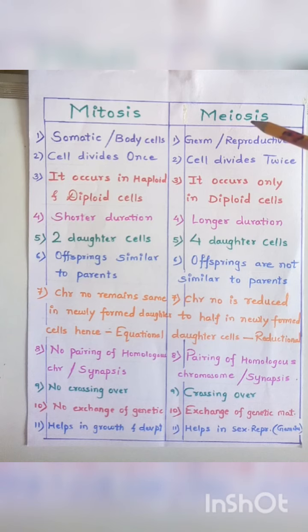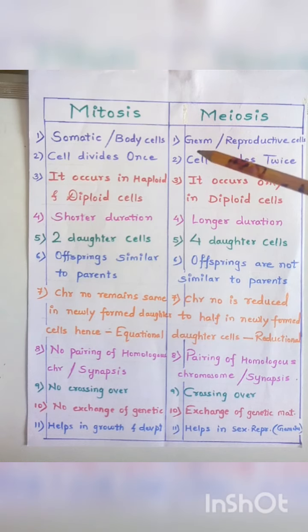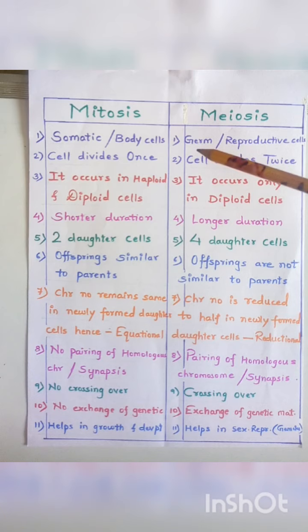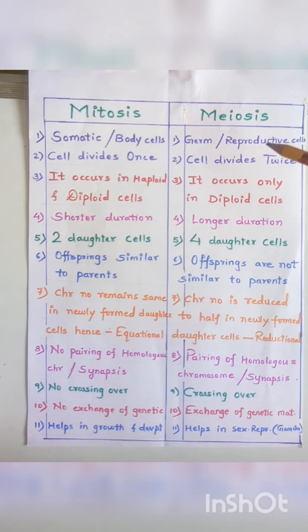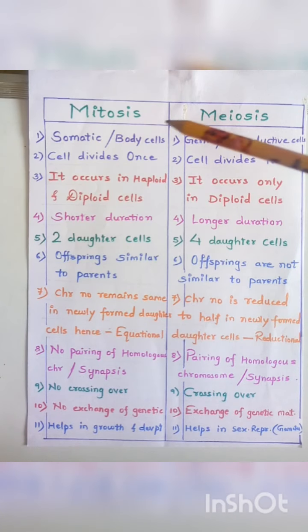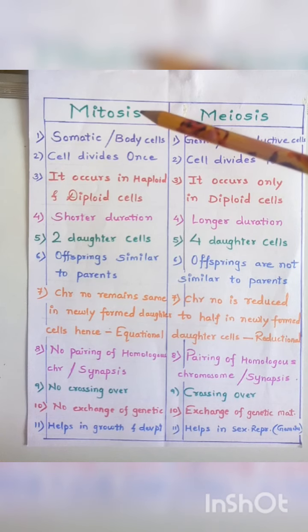Whereas meiosis takes place in the germ cells, that is germinal epithelial cells or reproductive cells. Mitosis is a cell division in which the cell divides only once.